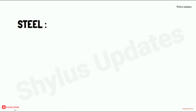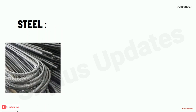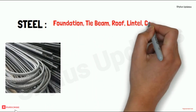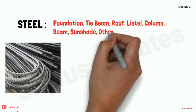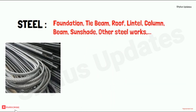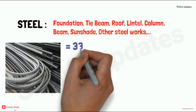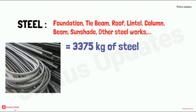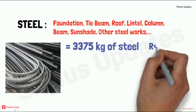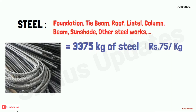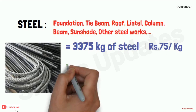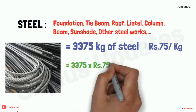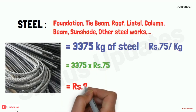Steel is used in foundation, tie beam, roof, lintel, column, beam, sunshade, and other steel works. For a 750 square feet house, 3,375 kg of steel are required. The current market rate of steel is rupees 70 to 75 per kilogram. When you multiply 3,375 kg into rupees 75, you get rupees 2,53,125.